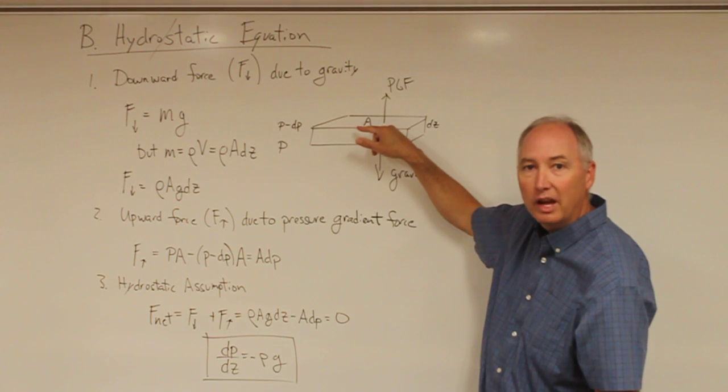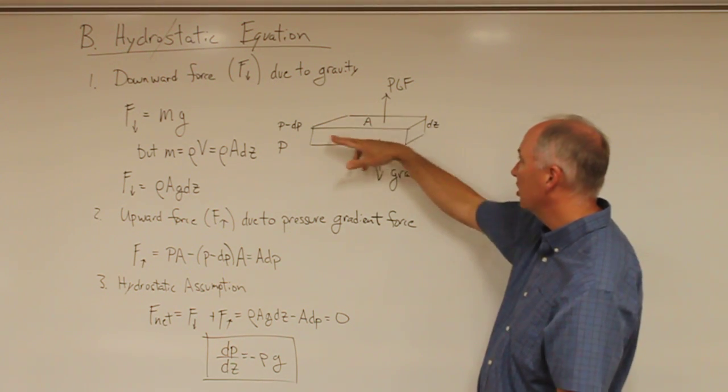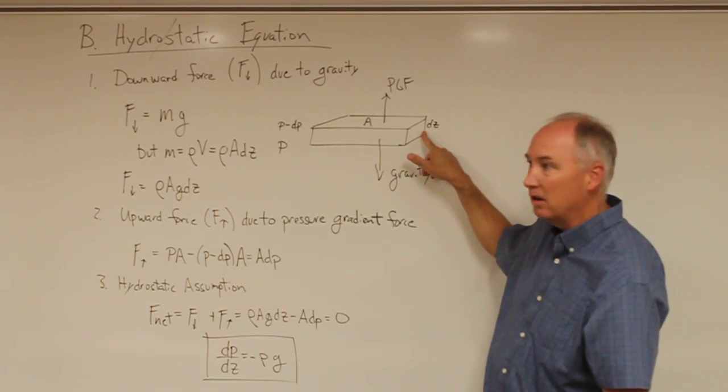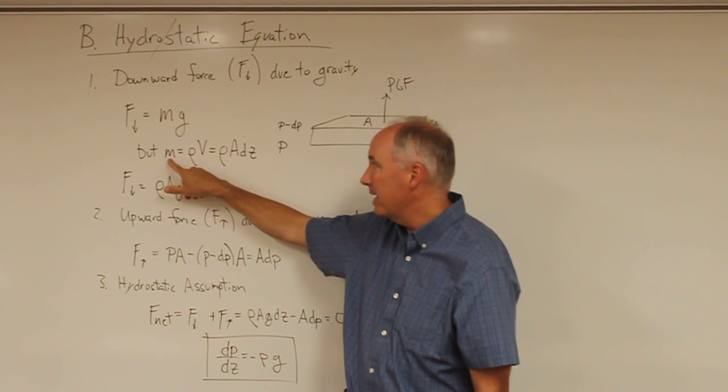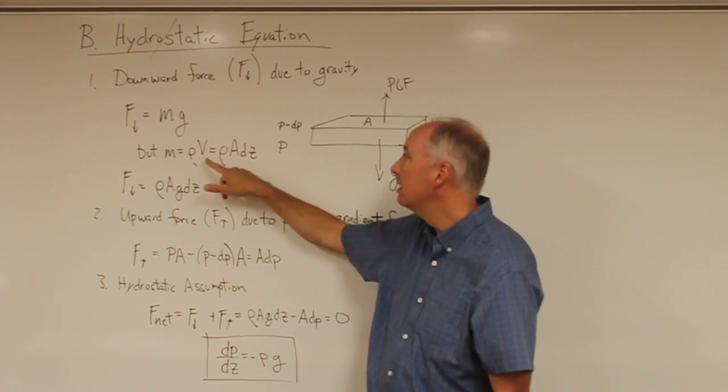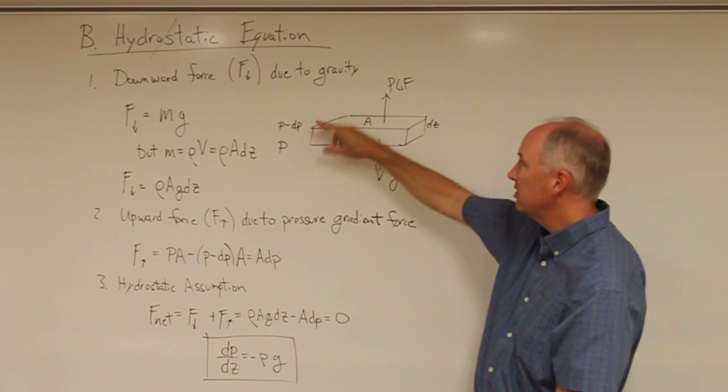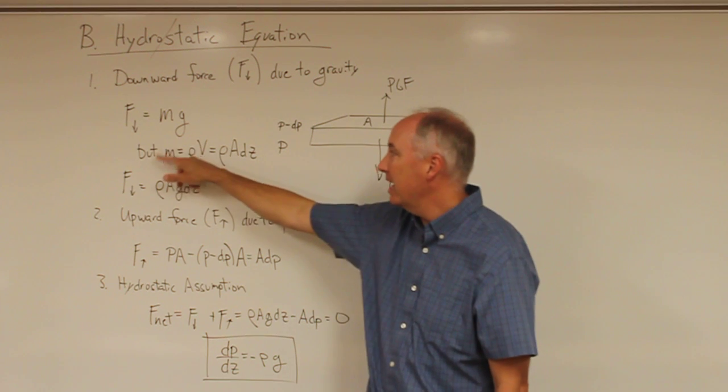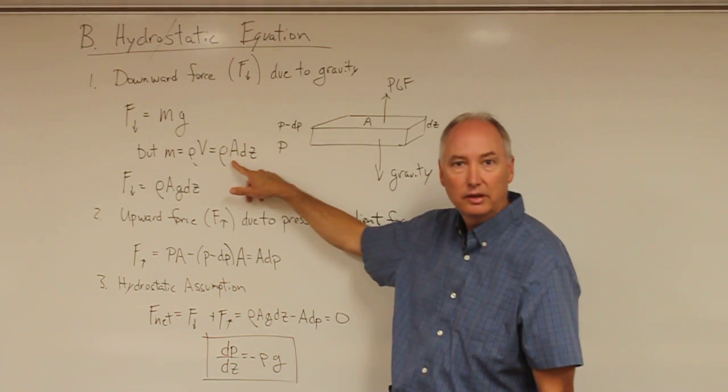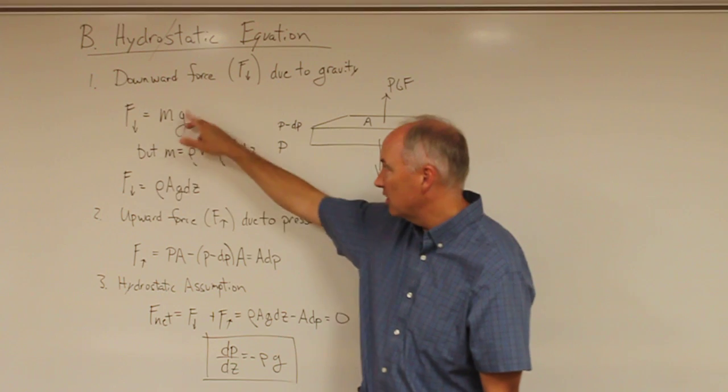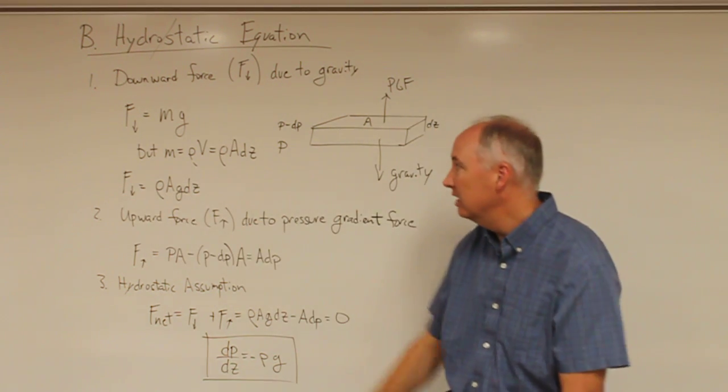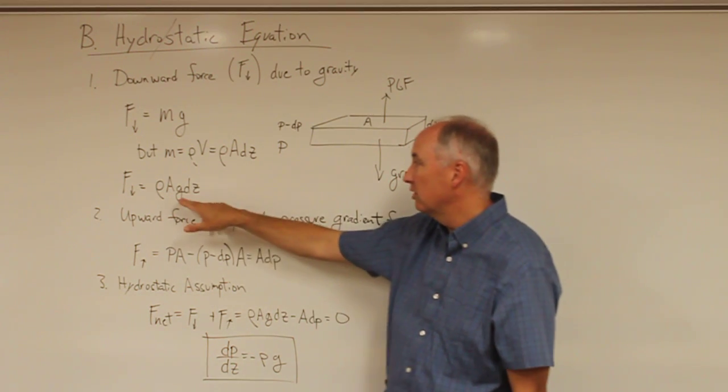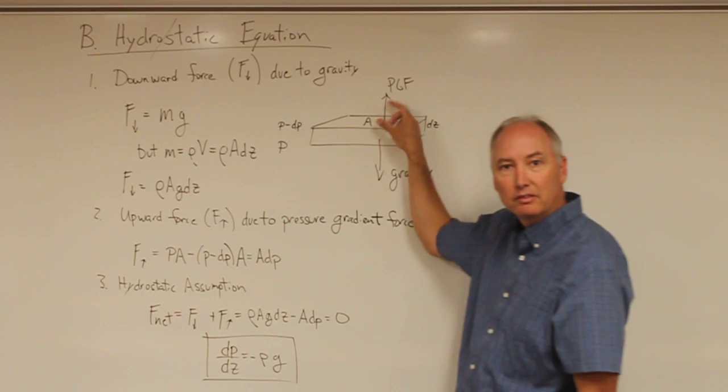But we can translate the mass of this air parcel into something that can be derived mathematically. If we look at some cross-sectional area A, which is simply the horizontal width times the length, times the depth of this air parcel dz, we know that the mass is equal to the density times the volume. So the mass total is density times the cross-sectional area times the depth. Putting that together, the downward force of gravity is equal to the density of our air parcel times the cross-sectional area times the force of gravity times the depth of that air parcel.